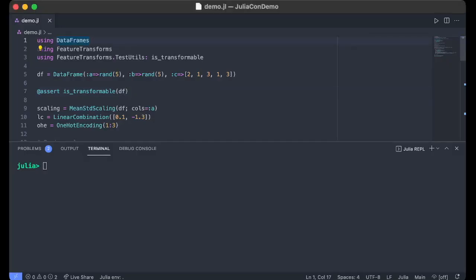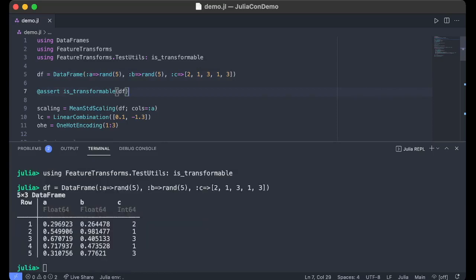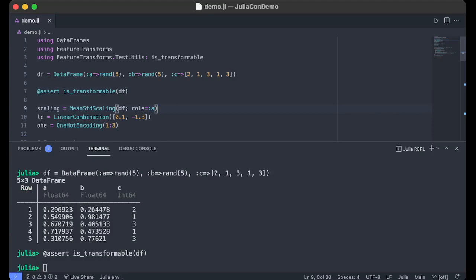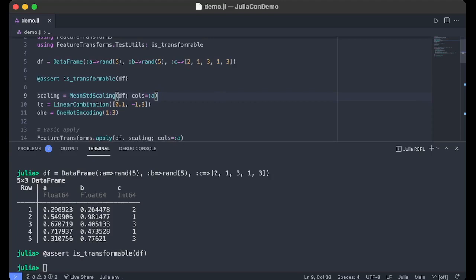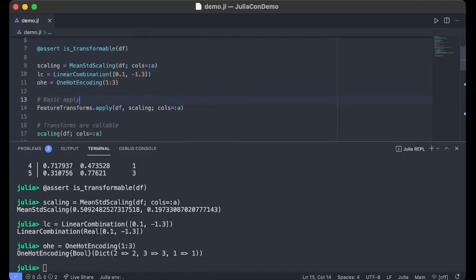So let's take a look at the example from the readme. Say we've been given some table to perform feature engineering on. Although we want to be beyond tables, I'll use it as an example here for simplicity. The first thing we want to do is check that it's supported by FeatureTransforms, which we can do by calling isTransformable. This checks the table can be called with some apply method. Say our operations consist of a standardization scaling, a linear combination, and a one-hot encoding.